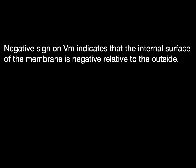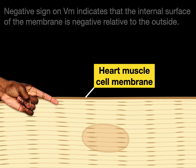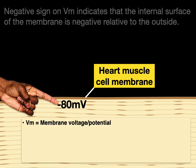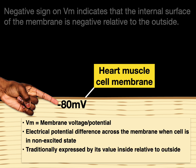The negative sign on the VM indicates that the internal surface of the heart muscle cell membrane is negative relative to the outside. Here's a heart muscle cell, and the cell membrane or sarcolemma is indicated. On its internal surface, it's negative 80 millivolts, which means the VM — the membrane voltage or membrane potential — is negative 80 millivolts for this heart muscle cell membrane. It's the electrical potential difference across the membrane when the cell is in a non-excited state.